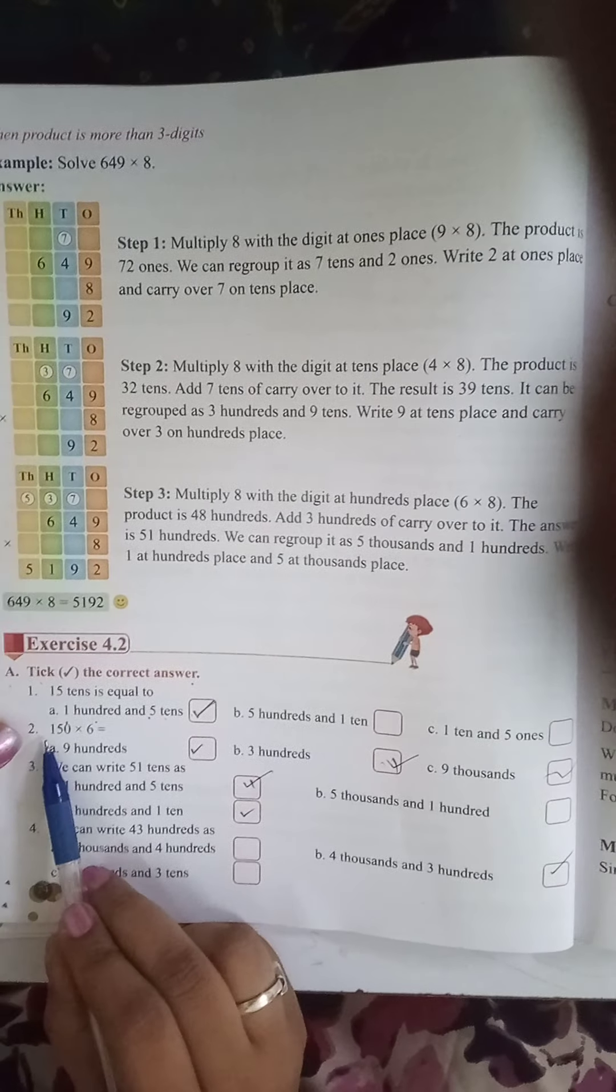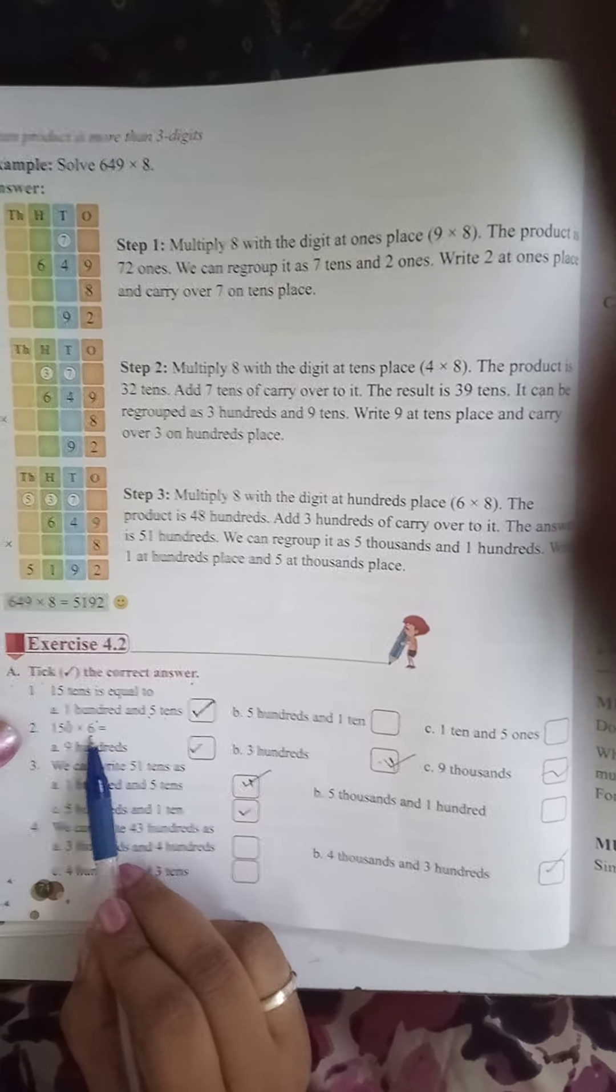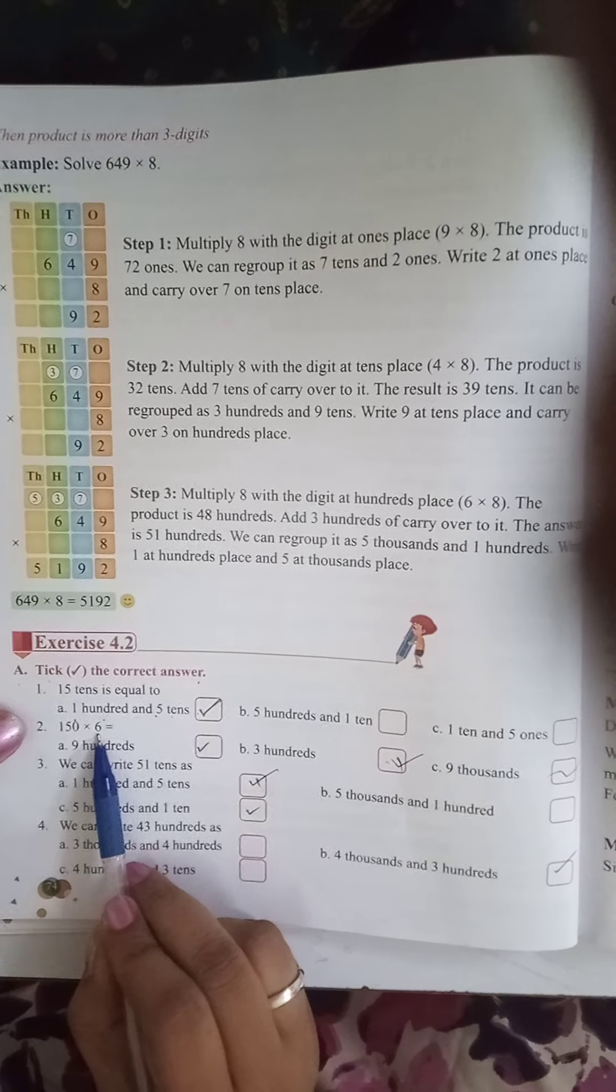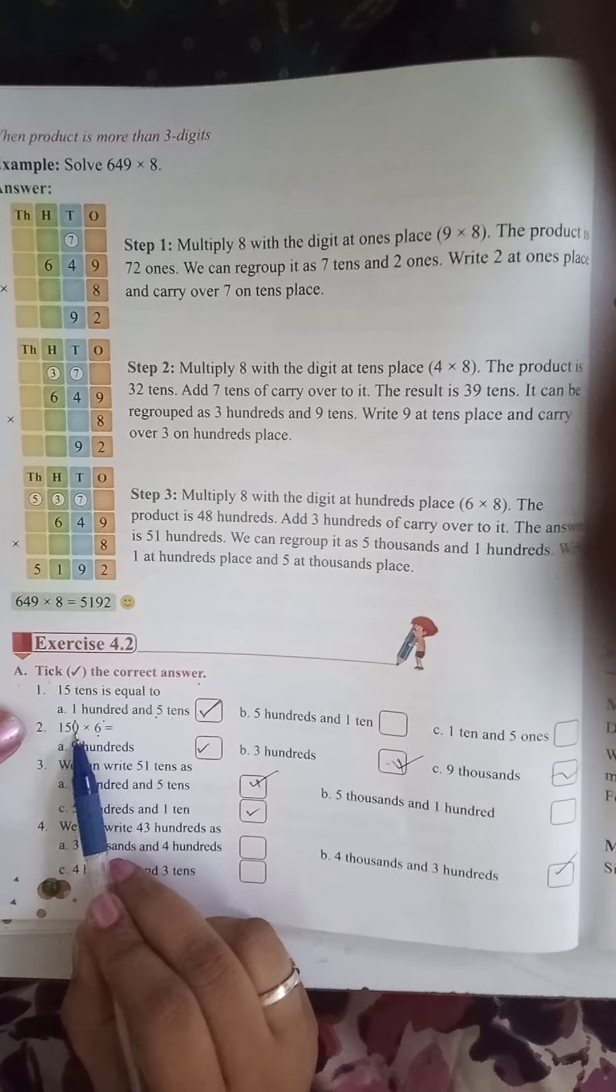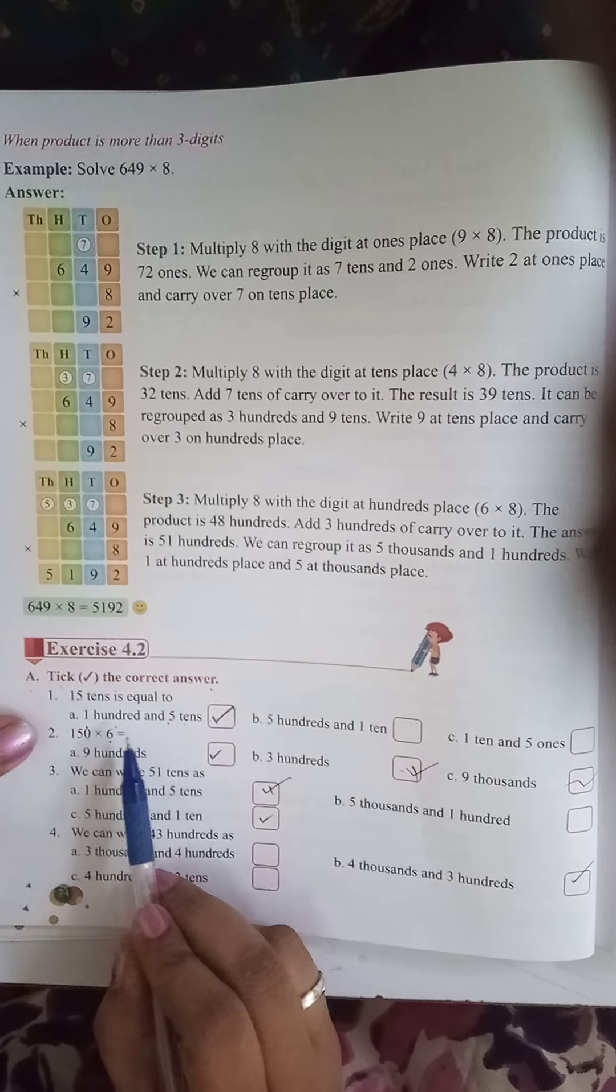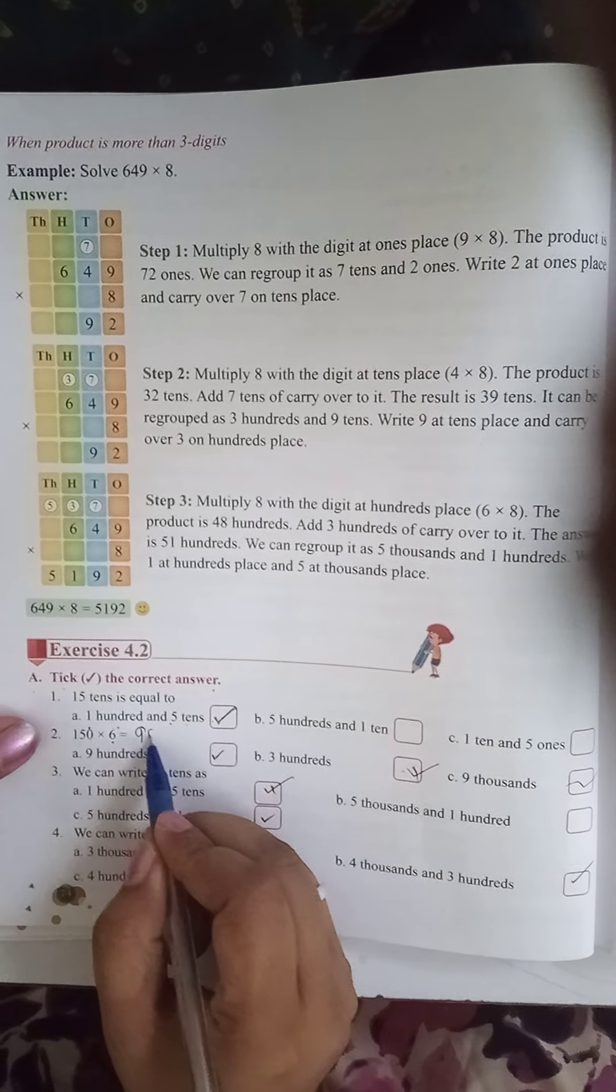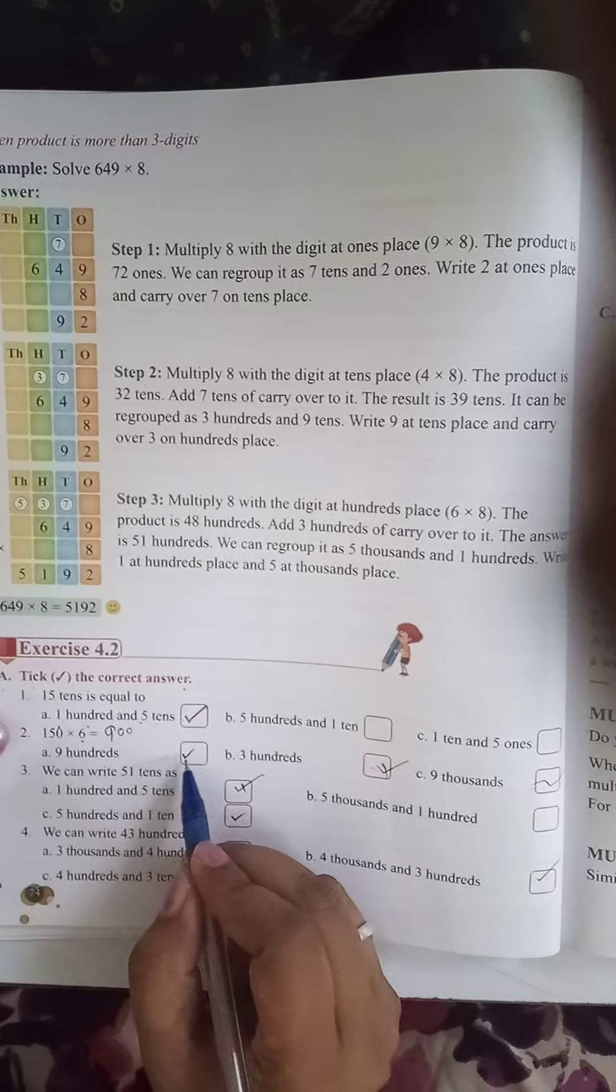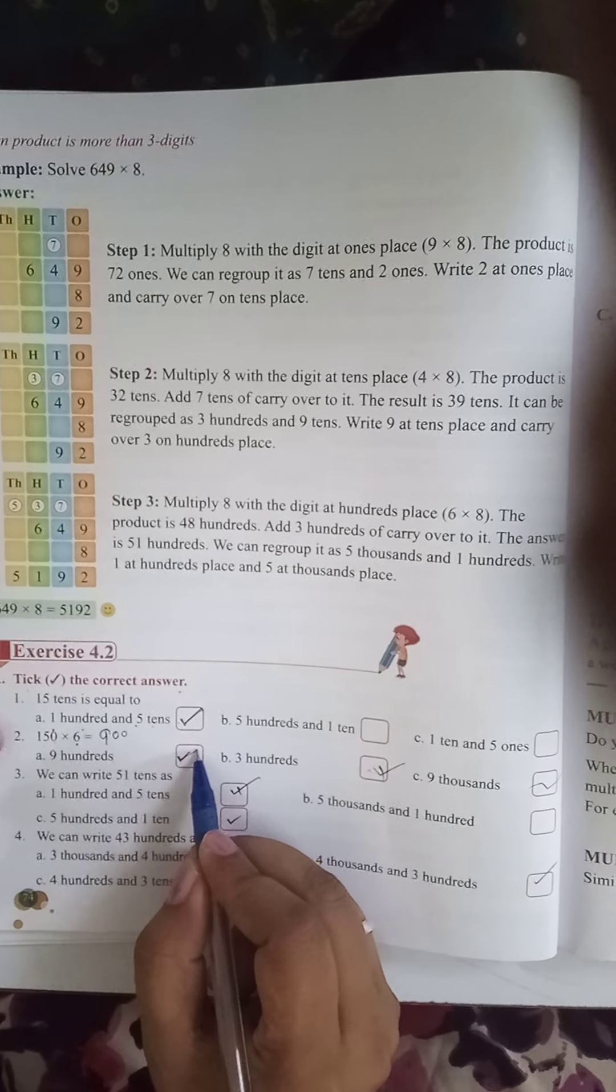Then second is 150 multiplied by 6. So you can make multiplication. Now 15, 6, 90 and plus 10. The answer will be 900. The A option will be right.